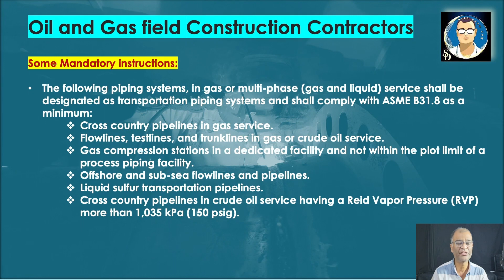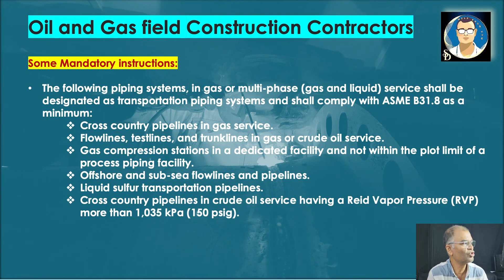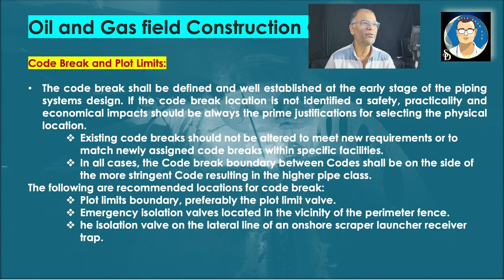Piping systems in gas or multi-phase gas-oil-liquid service shall be designed per B31.8. This includes cross-country pipelines in gas service, flow lines, test lines, and trunk lines in gas and crude oil service, gas compression stations in a dedicated facility not within the plot limit of a process piping facility, offshore and subsea flow lines and pipelines, liquid sulfur transportation pipelines, and cross-country pipelines in crude oil service having a Reid vapor pressure more than 1035 kPa (150 psi).